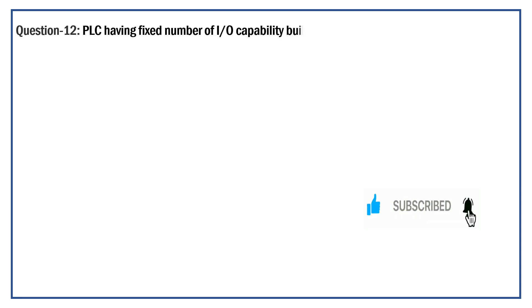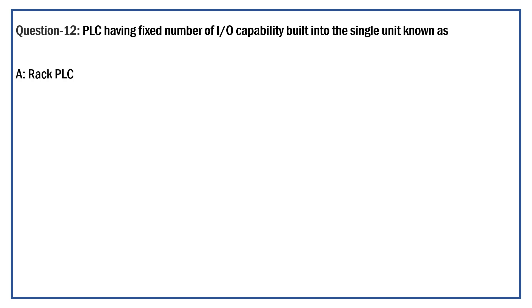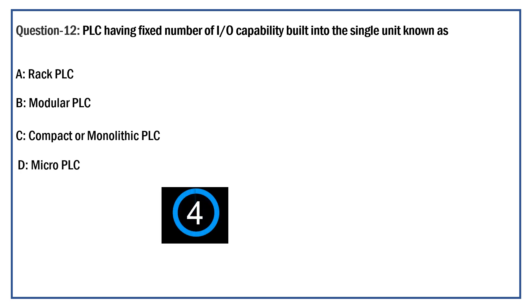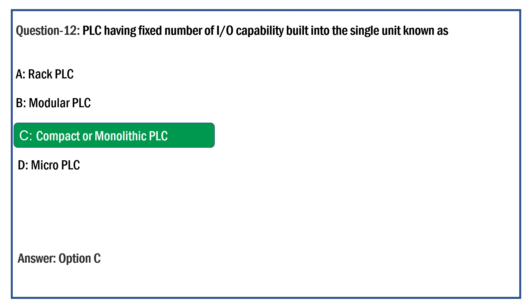A PLC having a fixed number of I/O capability built into a single unit is known as — Option A: Rack PLC. Option B: Modular PLC. Option C: Compact or Monolithic PLC. Option D: Micro PLC. The right answer is Option C: Compact or Monolithic PLC. Yes, a compact or monolithic PLC has a fixed number of I/O capability built into a single unit.